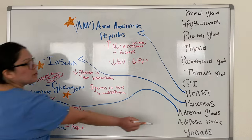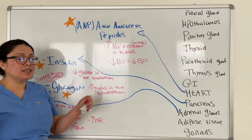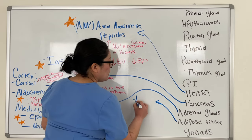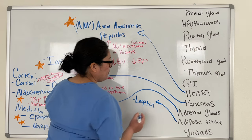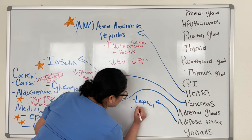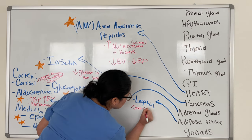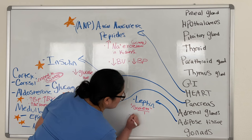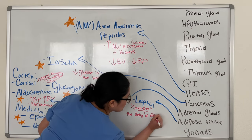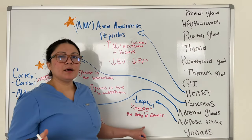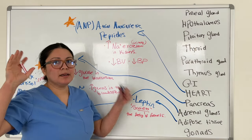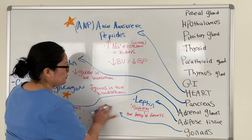Your adipose tissue excretes one hormone you need to know: leptin. Leptin causes satiety — meaning the feeling of fullness — sending a signal to the brain that says the person is full, so don't overeat.